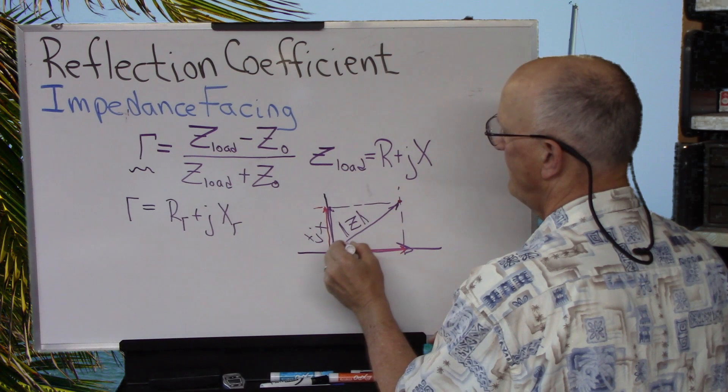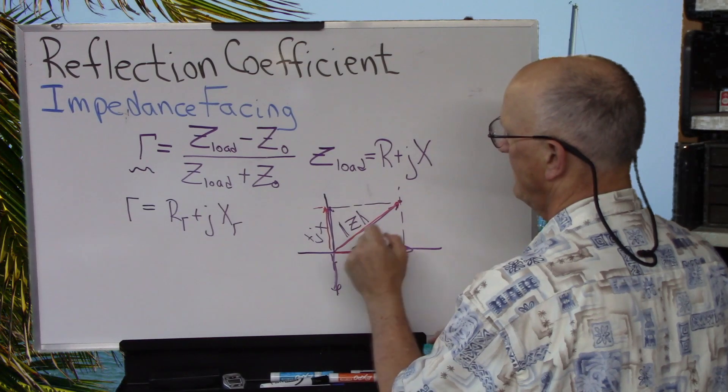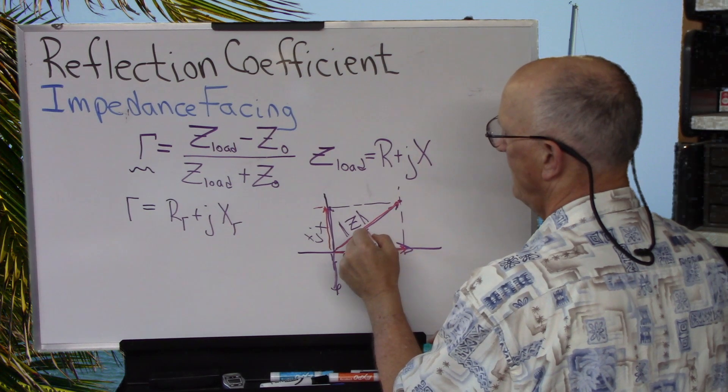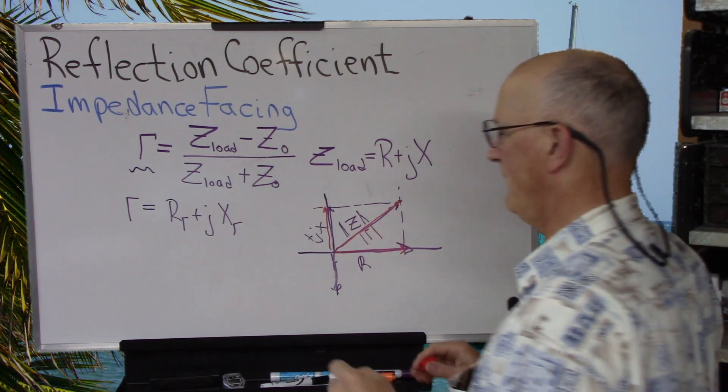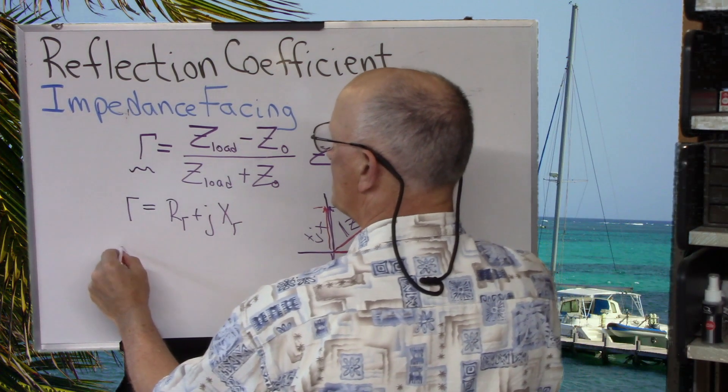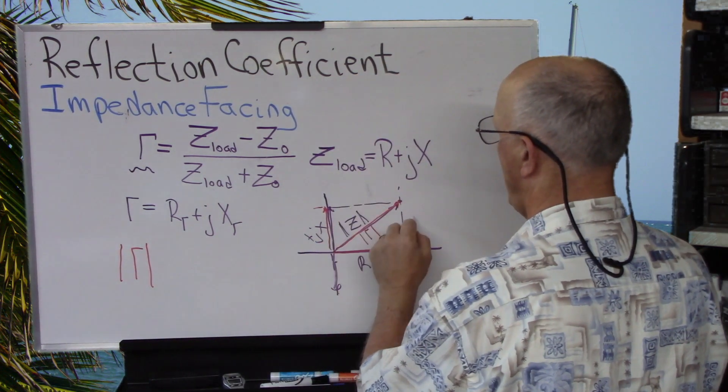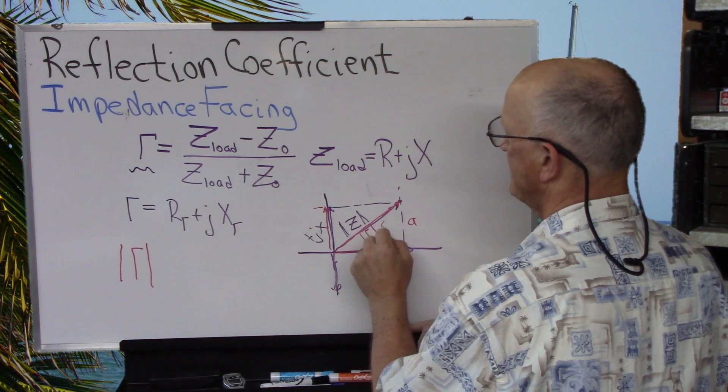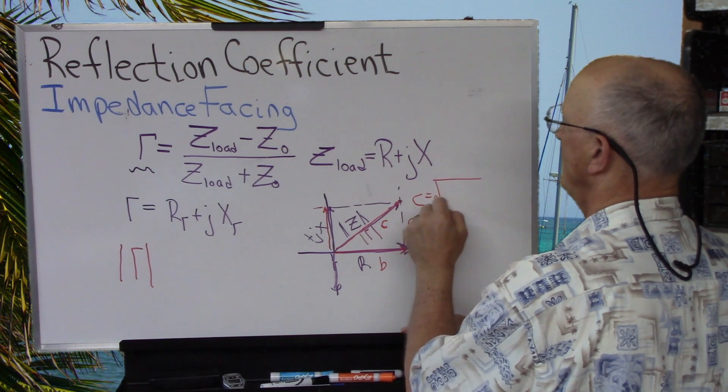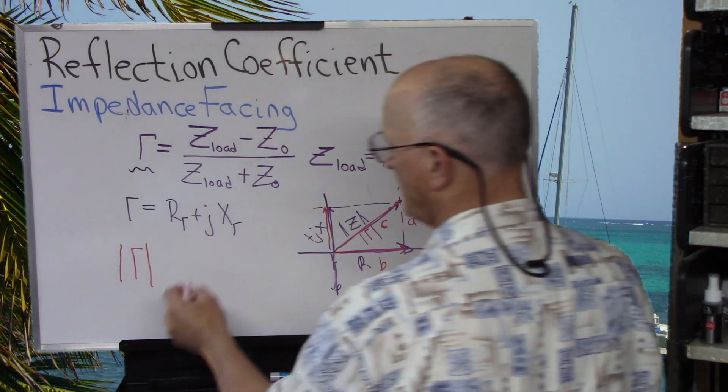That plots out to a point out here. We get a vector that comes out here which forms, if you look, we have a right triangle here. And this, the length of this is equal to the magnitude of gamma. And if you do standard geometric math, you know that this is A, B, C on a right triangle. And C is equal to the square root of A squared plus B squared. So, we do the same thing here.